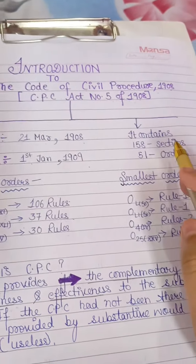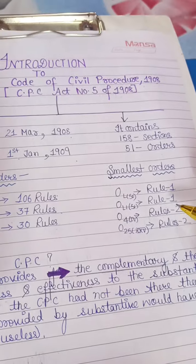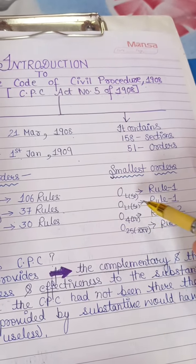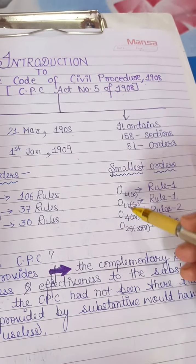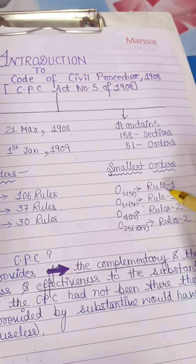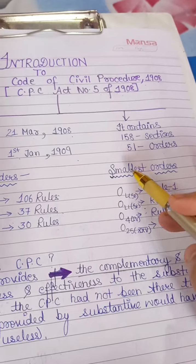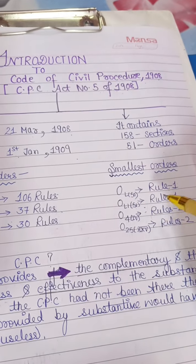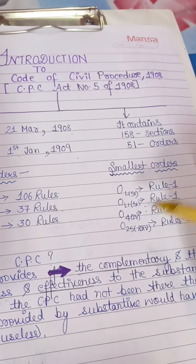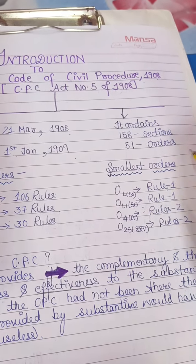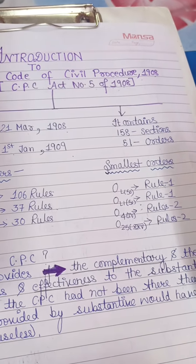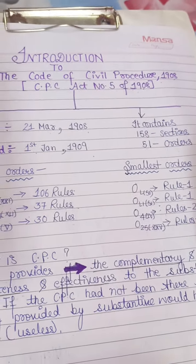Whereas the smallest orders are Order 50, which contains only 1 rule, Order 51, which also contains only 1 rule, and Order 4 and Order 25, which each contain 2 rules.